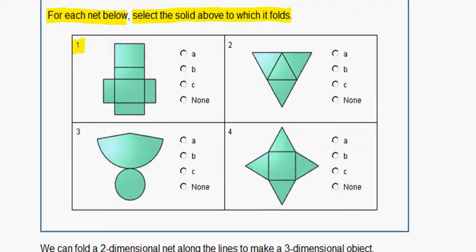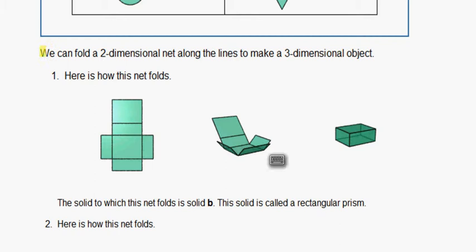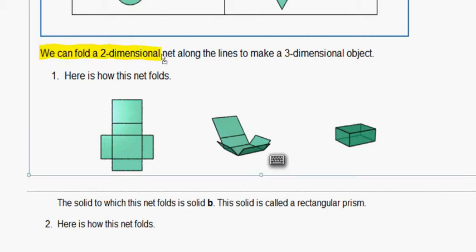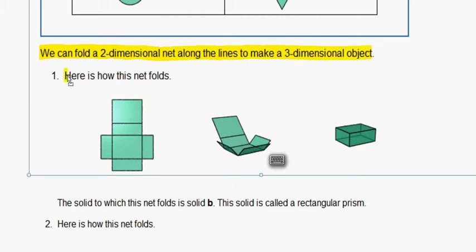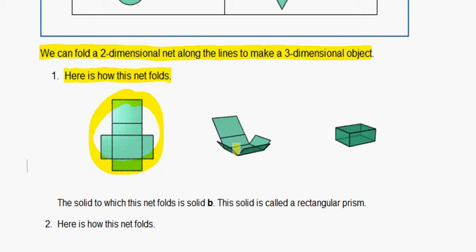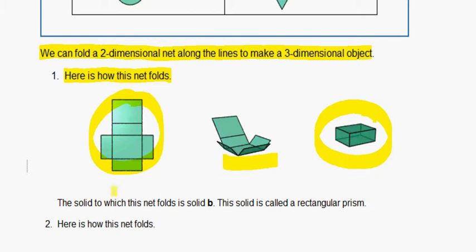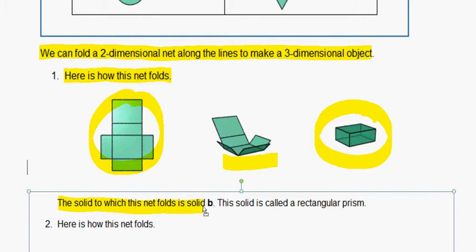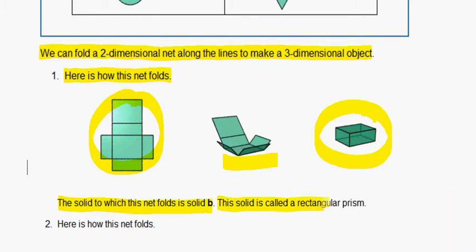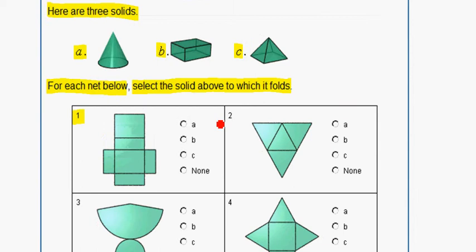Let's start with question 1. We can fold a two-dimensional net along the lines to make a three-dimensional object. Here is how this net folds: we start with this, then it folds up like this, and this is what it looks like when it's all folded up. The solid to which this net folds is solid B, called a rectangular prism. So we can see that it folds up to be figure B.